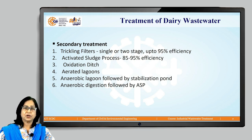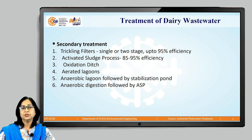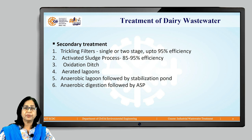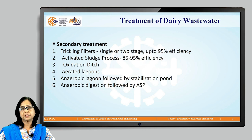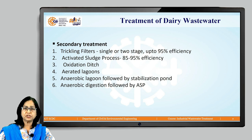Since the initial BOD of dairy wastewater is high — about 1000 mg/L — a combination of anaerobic treatment followed by aerobic treatment is a cheap and efficient alternative. When a digester or UASB is employed, it also enables recovery of methane gas or biogas. An anaerobic lagoon followed by a stabilization pond is also preferred, and another alternate treatment is anaerobic digestion with biogas recovery followed by the activated sludge process. All these treatments give high efficiency and can achieve disposal standards for dairy wastewater.